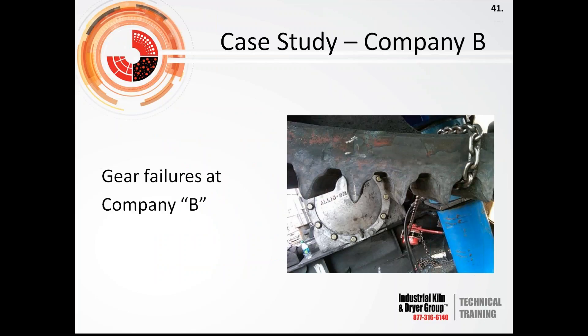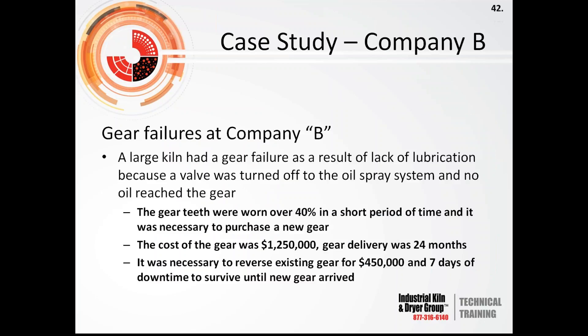Now let's look at a major gear failure at Company B. Again, lack of lubrication — because the lubrication valve was turned off to the oil spray system during a shutdown and no oil reached the gear. Gear teeth worn over 40% in a short period of time, requiring a new gear. Cost of the gear: $1,250,000. Gear delivery was 24 months. To keep the plant running, it was necessary to reverse the existing worn gear for $450,000 and 7 days of downtime — but significant wear meant they were running on borrowed time.